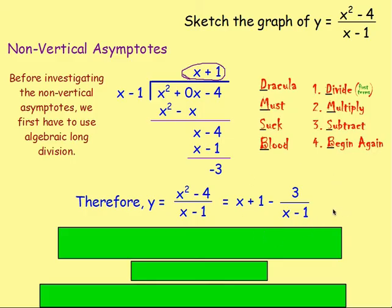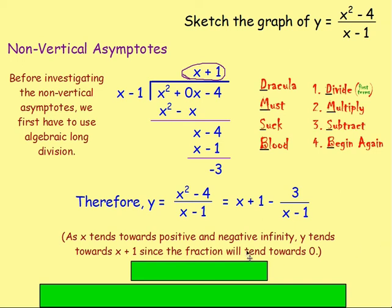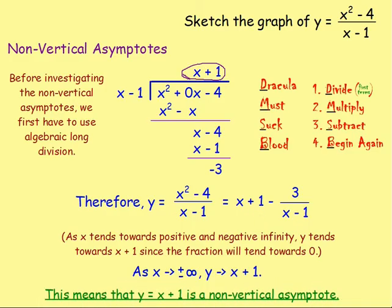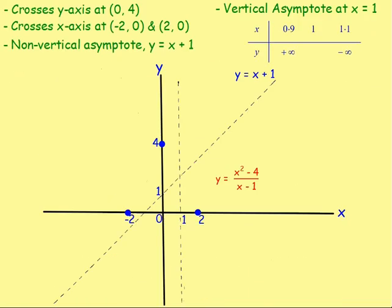For the non-vertical asymptotes, think about what happens as X tends towards positive and negative infinity. The fraction negative 3 over X minus 1 will tend towards zero because the denominator gets bigger and bigger. Therefore Y tends towards X plus 1. So Y equals X plus 1 is the non-vertical asymptote. Sketch that in as a dotted line, along with the vertical asymptote at X equals 1.